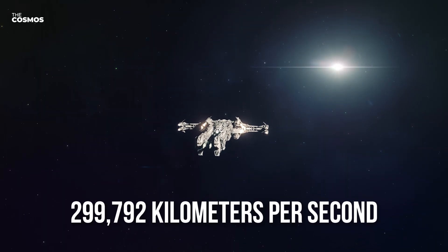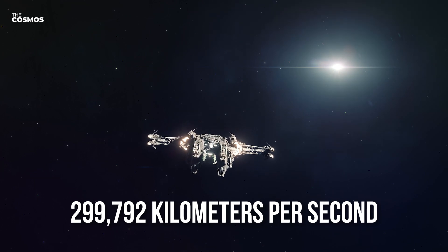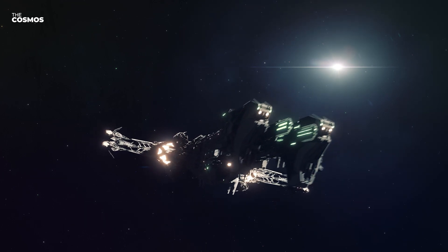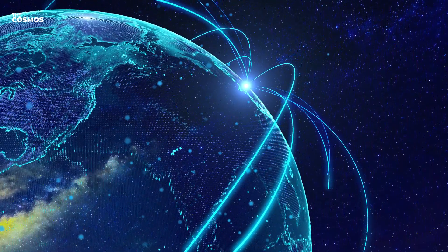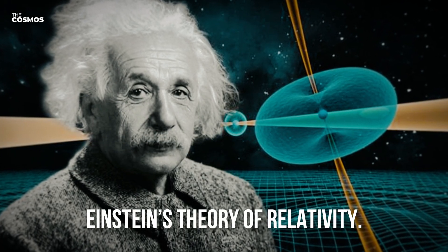Light travels at an astonishing 299,792 kilometers per second, a velocity so great that it can circumnavigate the Earth seven and a half times in just one second. At this speed, the rules of the universe as we know them begin to bend and warp, guided by Einstein's groundbreaking theory of relativity.